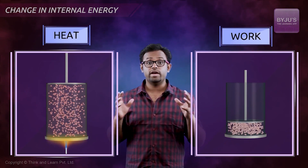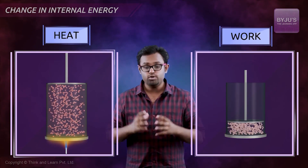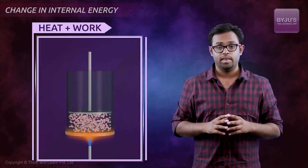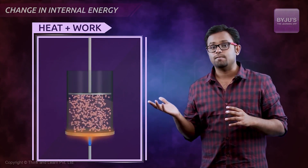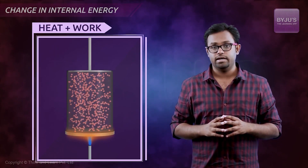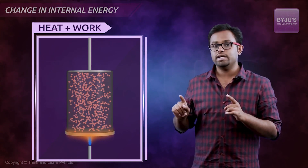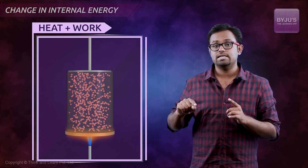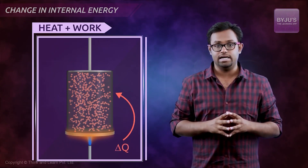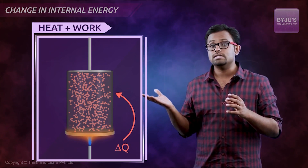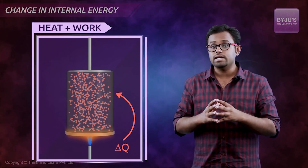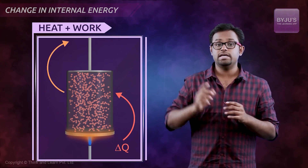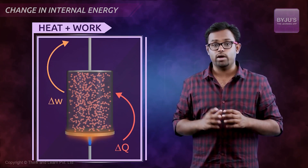These two modes of energy exchange can happen to a system simultaneously. Let's say we have a setup where we are heating the system and the system's piston also rises. Because we are heating, we are giving some energy — some heat delta Q — to the system, and this piston is going up, meaning the system is doing work on the surrounding, giving out some energy in the form of work delta W.